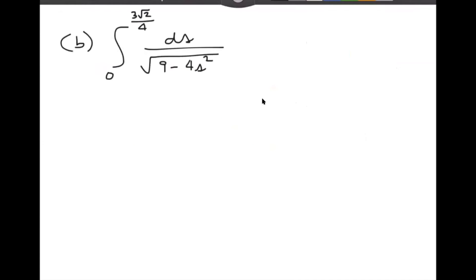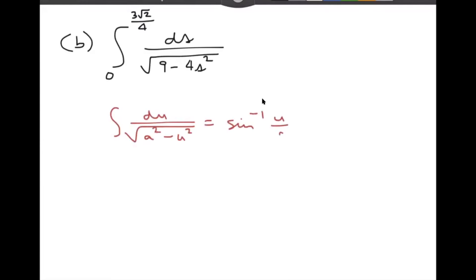The next example is a definite integral, kind of similar to the last one. Ask yourself: does this look most like an inverse sine, an inverse secant, or an inverse tangent? This one looks most like an inverse sine. The formula is: integral of du over the square root of a squared minus u squared equals inverse sine of u over a, plus C. In this problem, a squared is nine, which means a is three.